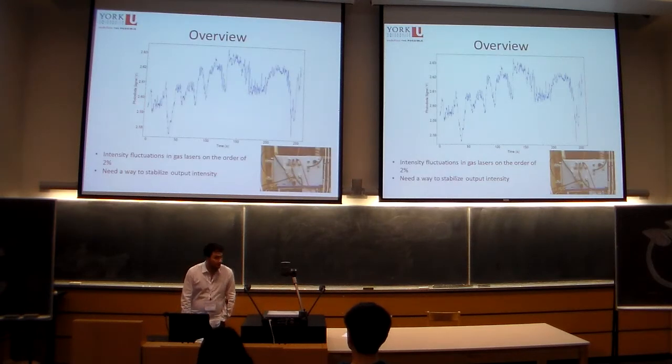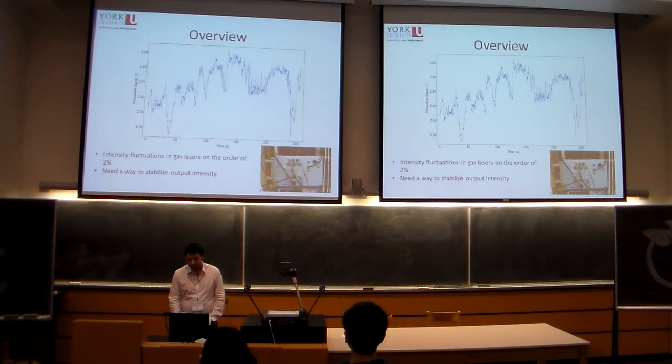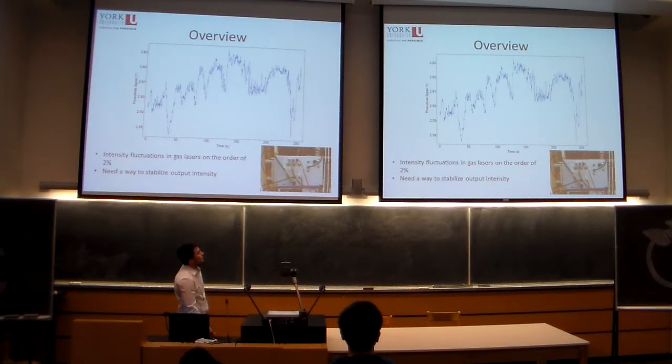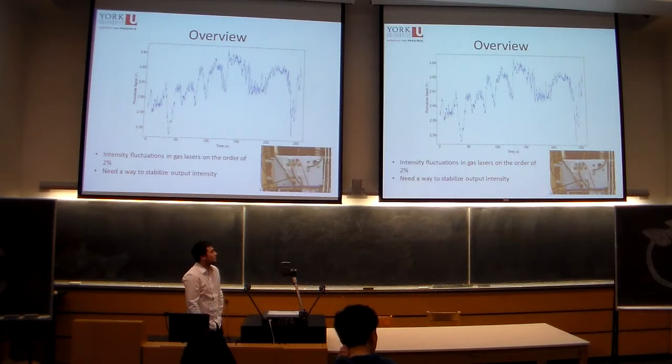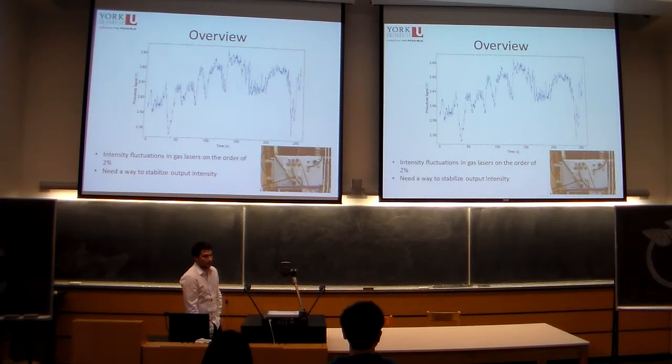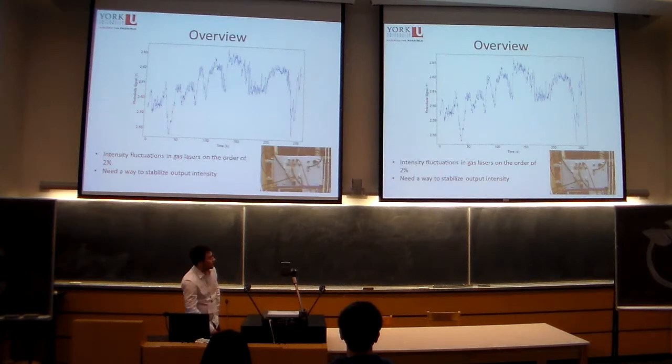So the problem is, when you have a gas laser, there are always intensity fluctuations on the order of around 2%. You can see that there, that's intensity fluctuations from our titanium sapphire laser in the lab, and it's about 2% over 250 seconds.